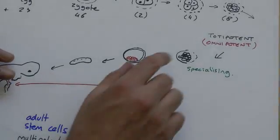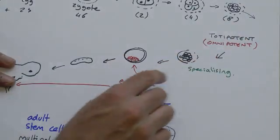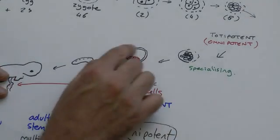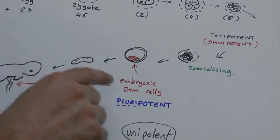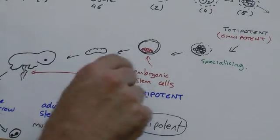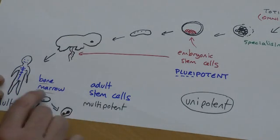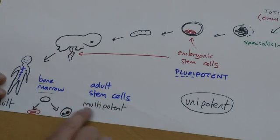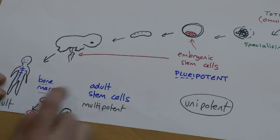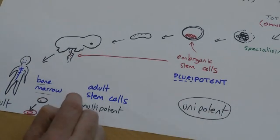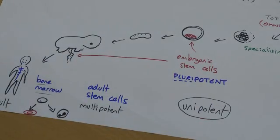So, again, just to recap. Totipotent cells, which can turn into the entire organism. Embryonic stem cells, when you have this ball of cells sitting inside the very early embryo, which can turn into any tissue or organ, but not the whole thing. And then we've got the adult stem cells, which are multipotent, which can turn into a few different things, but not that much. Most of the cells in the body, unipotent, once they've specialized and changed, that's it. You can't then get them to change back.